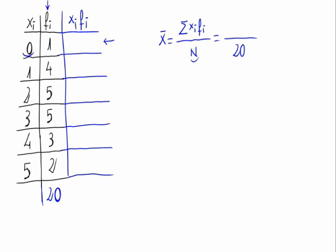That is 0 times 1, 0. 1 times 4, 4. 2 times 5, 10. 3 times 5, 15. 4 times 3, 12. And 5 times 2, 10.